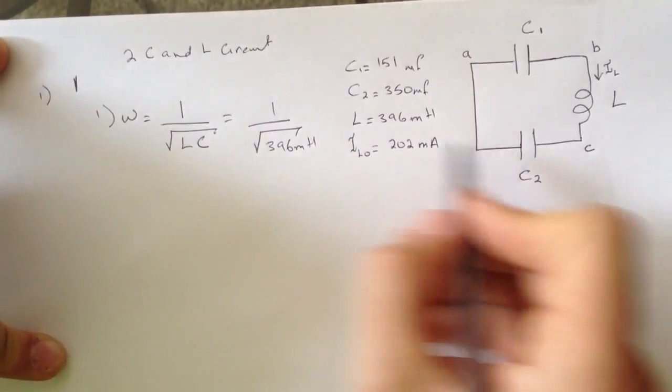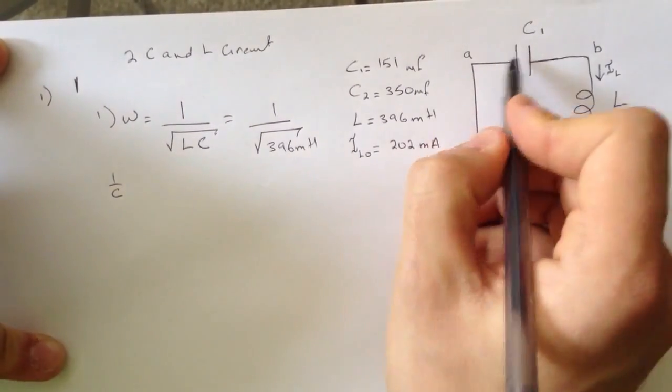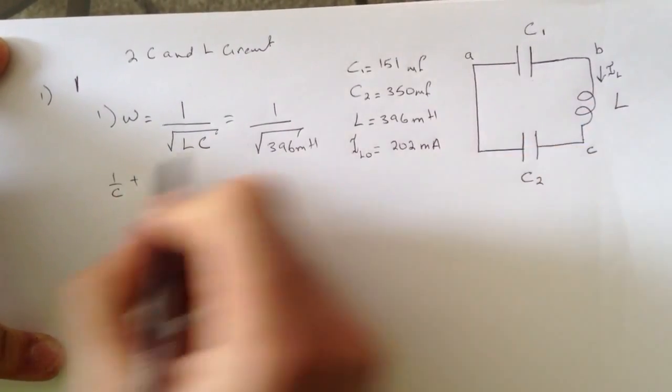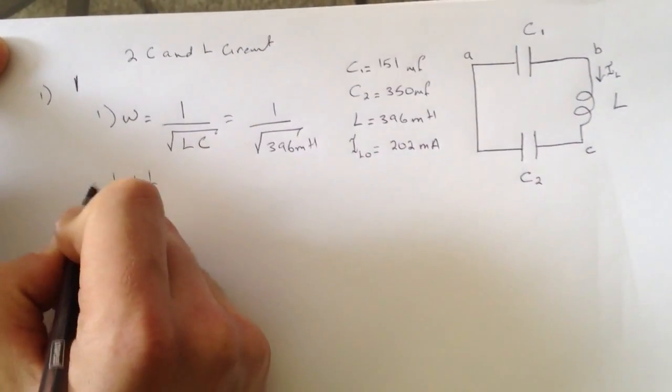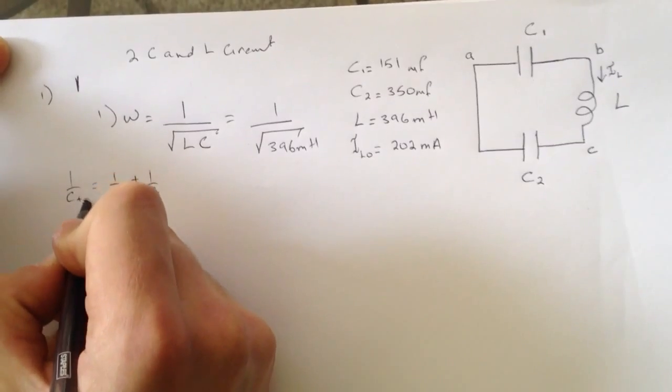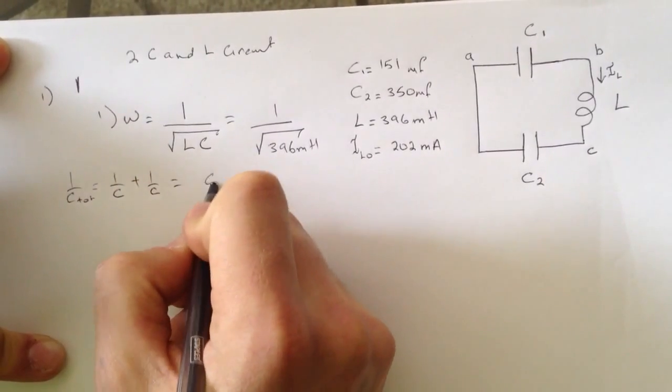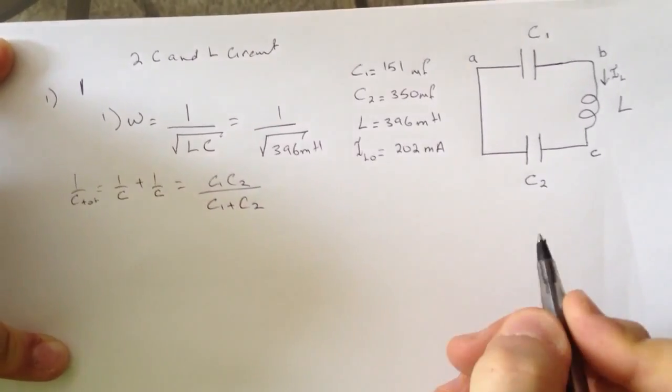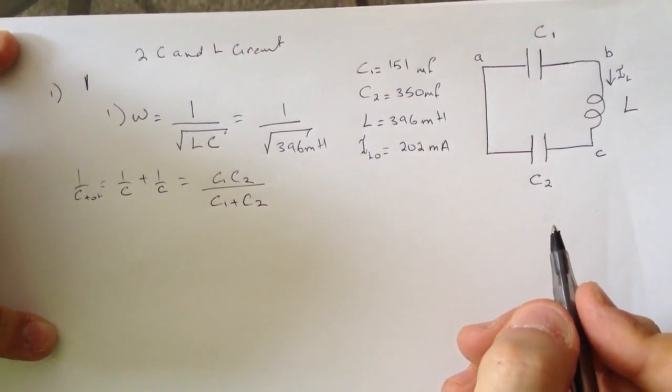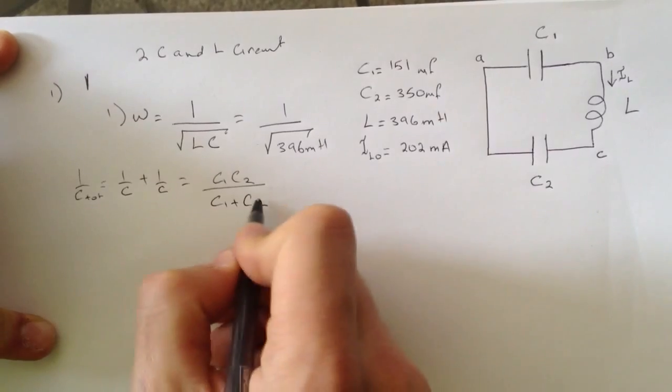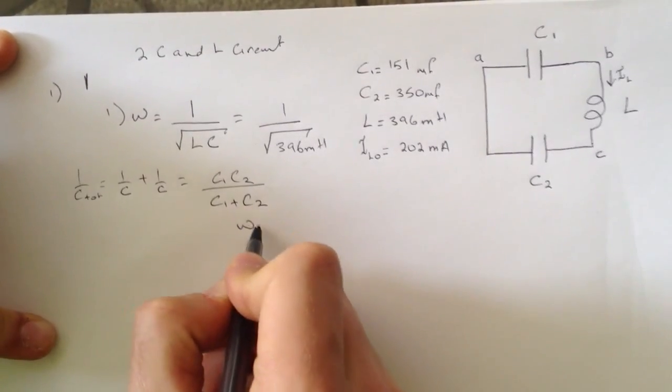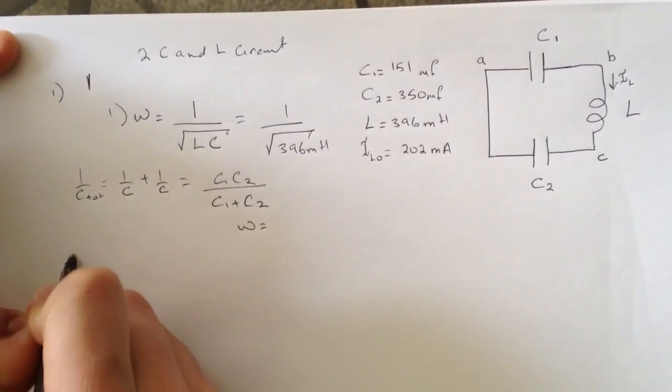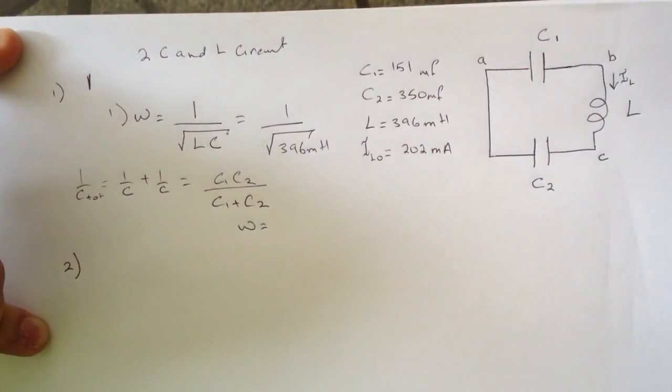And the capacitors - it's in series, so you're going to add them. 1 over C total is going to be C1 times C2 over C1 plus C2. So then we'll get the omega after this. This is the omega that we're going to get.